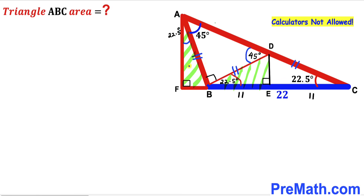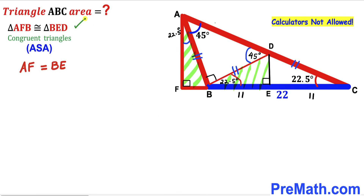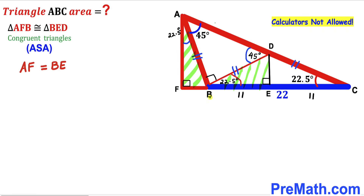Now we focus on these two right triangles: right triangle AFB and right triangle BED. These two right triangles are congruent according to the angle-side-angle congruency theorem. In triangle AFB the angle is 22.5 degrees and the angle is 90 degrees; likewise in triangle BED the angle is 22.5 degrees and the angle is 90 degrees; and the shared side is congruent. Since these two triangles are congruent, side AF equals side BE. We know BE is 11 units, so AF is 11 units as well.